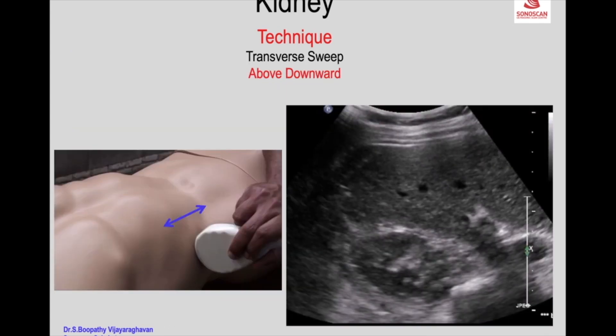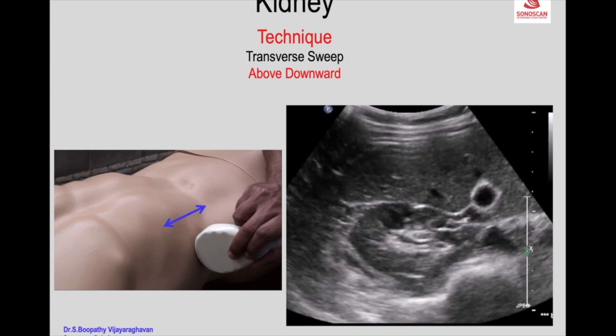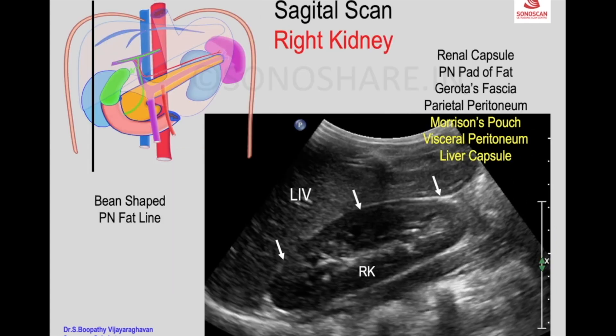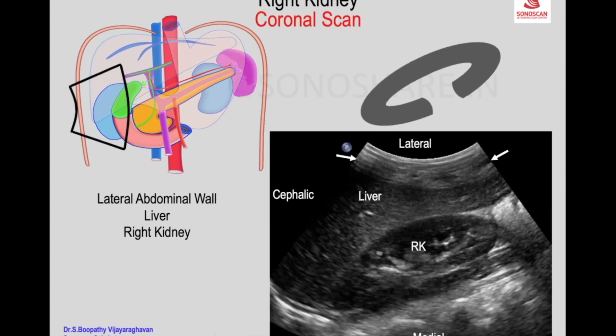Once you get the transverse axis, these are the structures you see: within the thin perinephric fat line, you see the parenchyma. The parenchyma is uniform in thickness all around, and the lateral aspect of the right lobe of the liver. Then you see the psoas muscle medial to the right kidney, and then the lateral surface of the vertebra seen as a white line with shadow.